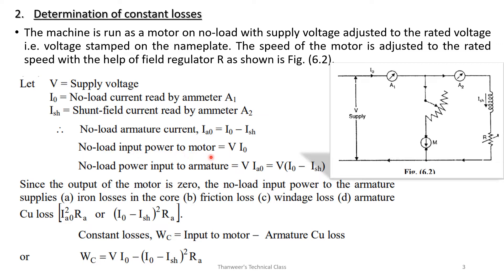The no-load input power to the motor is V × I₀. The no-load power input to the armature is V × (I₀ − I_SH), where I₀ − I_SH is the no-load armature current.